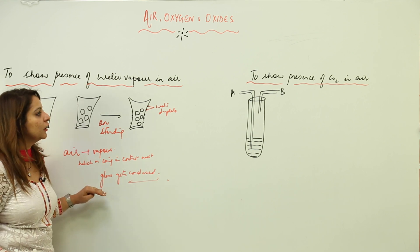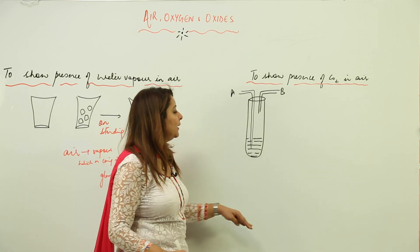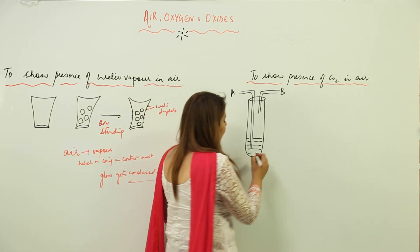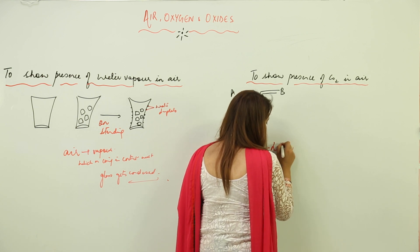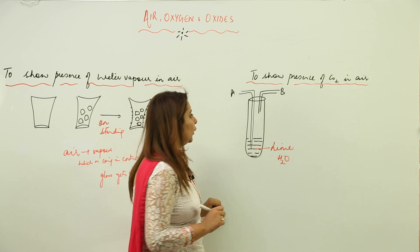Secondly, we are going to show that air also contains carbon dioxide. What we have done is taken lime water in a test tube which has two tubes, A and B. With the help of tube B, we are sucking in air.